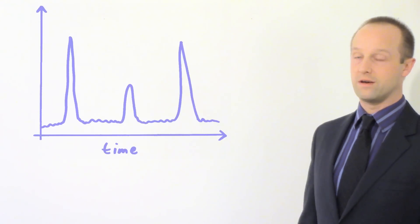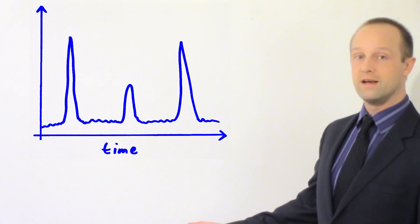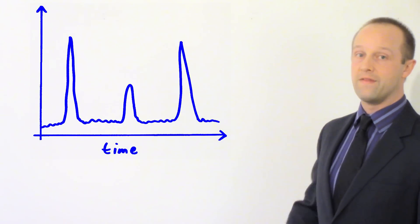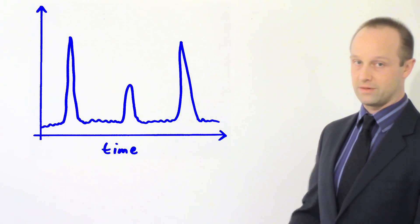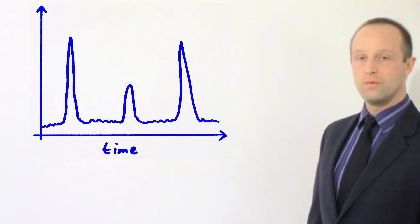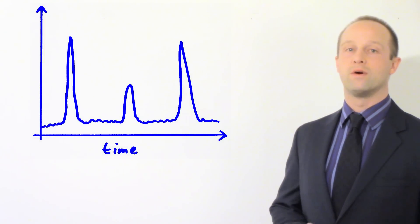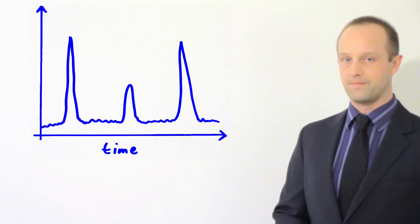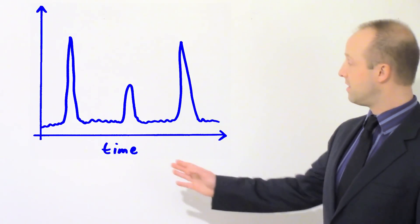Usually this is represented on a graph and the graph might look something like this. So the horizontal axis here is just time and that time again is going to relate to what the different compound is. You can see on this graph we've got three peaks on it. So that means in our mixture here there were three different compounds and we can just read the time that they came out of the mixture from here.